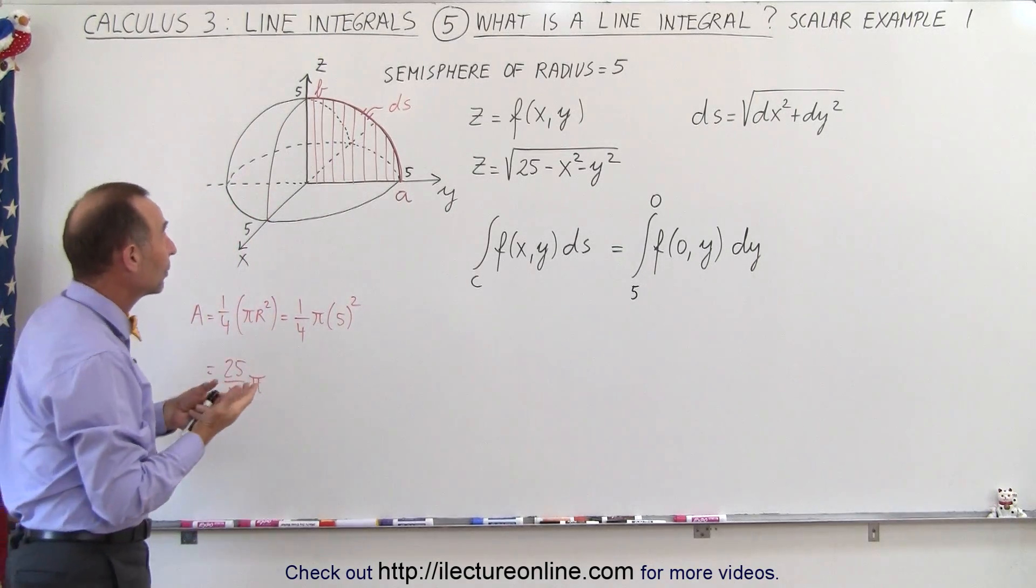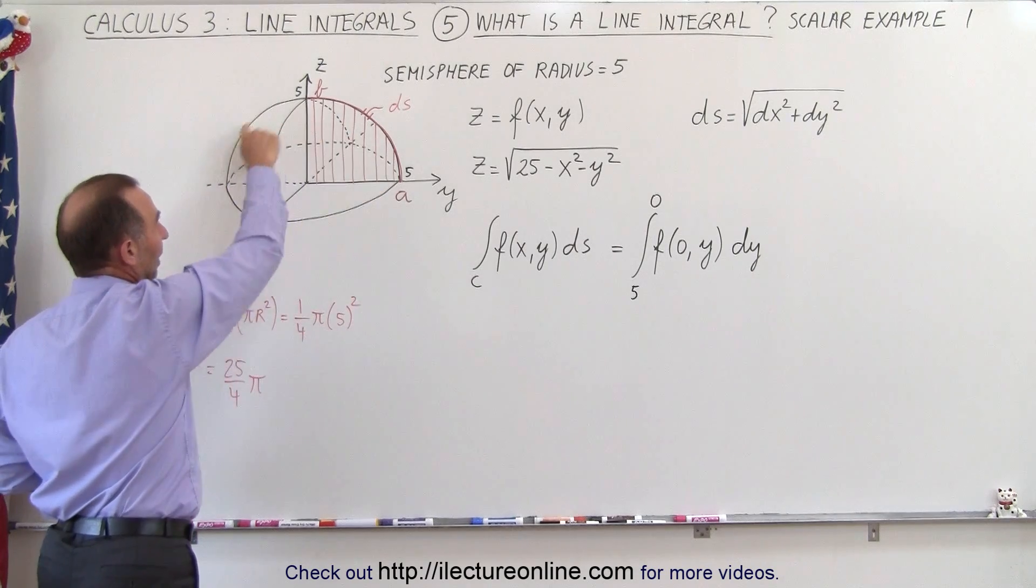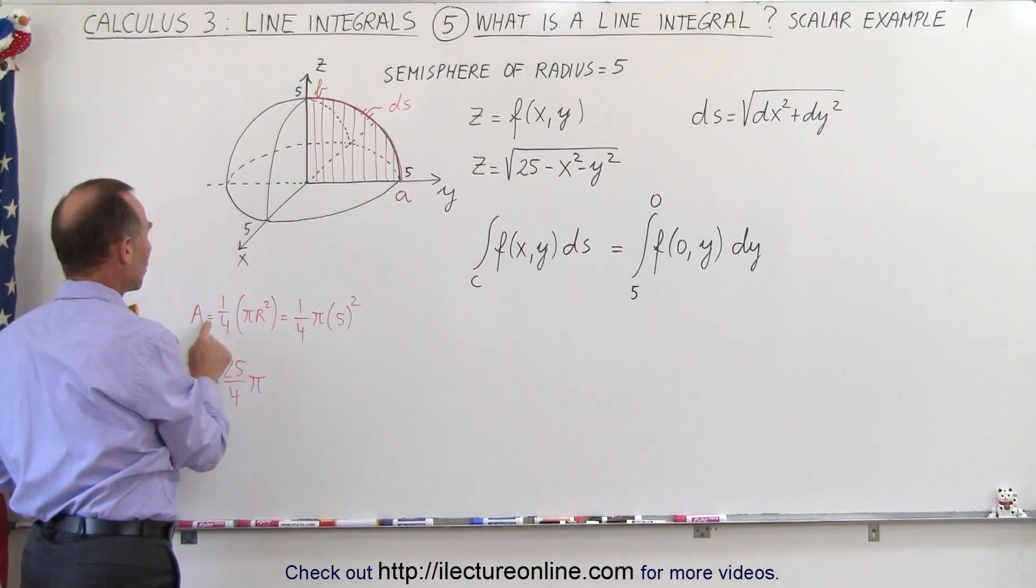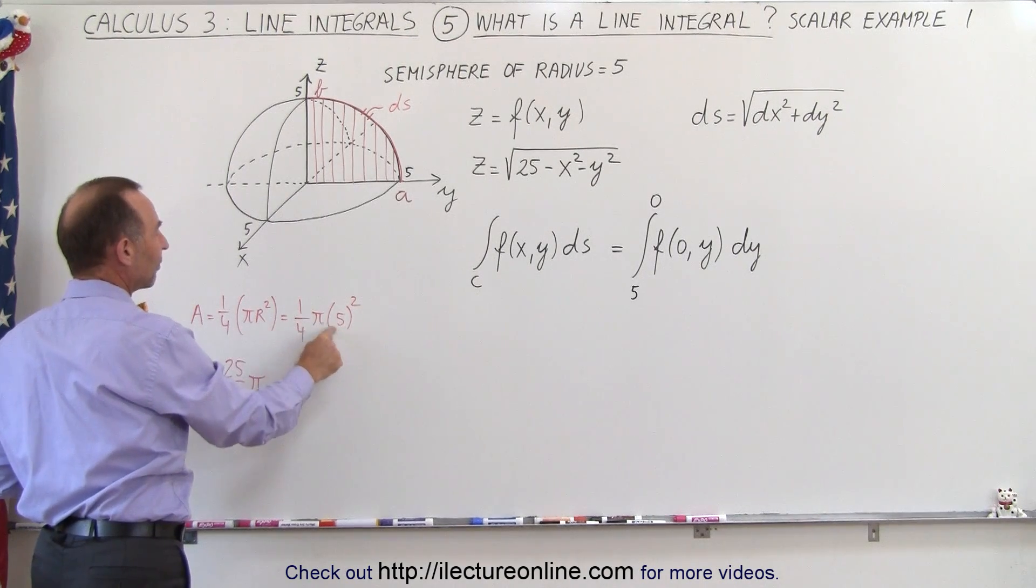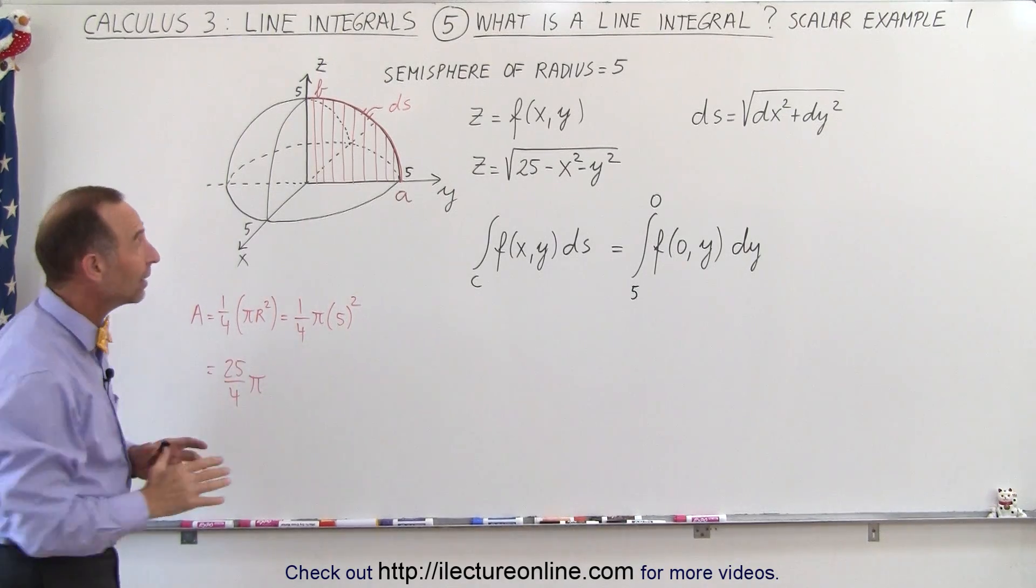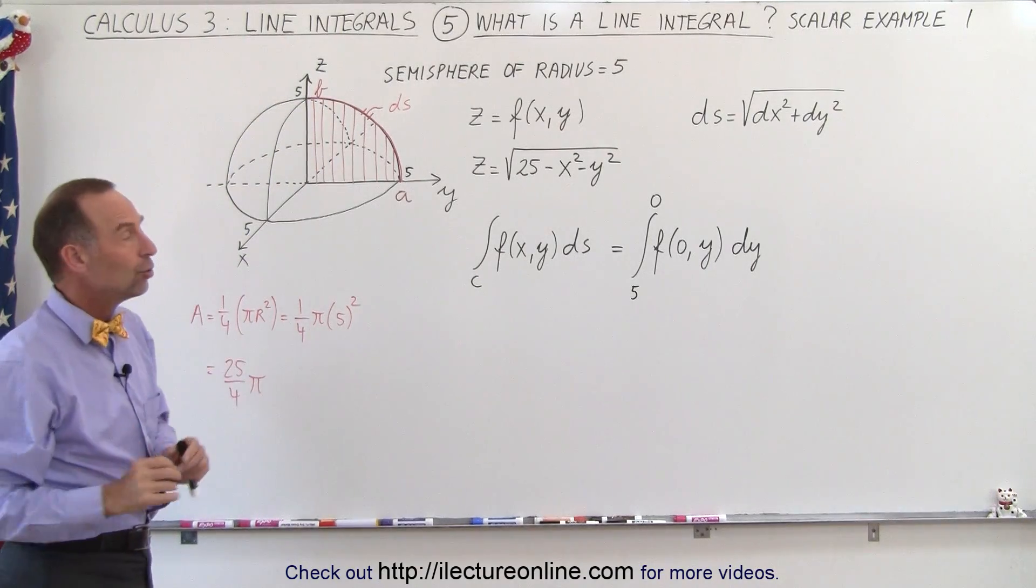Now you can see that that's the area of a quarter of a circle, because if we have a full circle, this is just a quarter of it. So the area should be one quarter pi r squared. Since r is equal to 5, it's one quarter pi 5 squared, or 25 over 4 pi. That's the answer we should get when we do a line integral along that ridge there. So let's go ahead and do that.